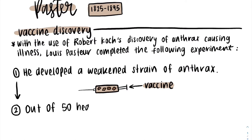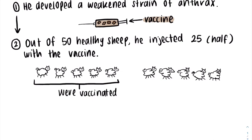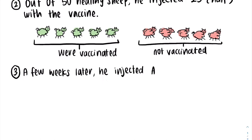Next, out of 50 healthy sheep, he injected half with the vaccine and left half without the vaccine. A few weeks later, he injected all 50 sheep with the normal anthrax bacterium.